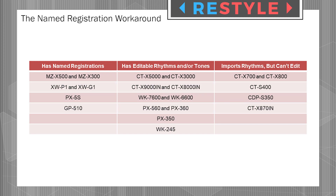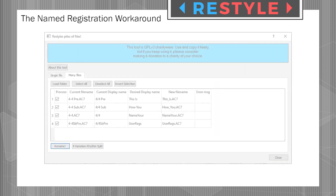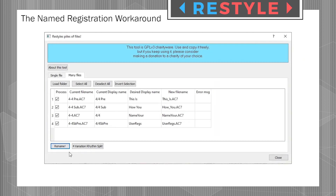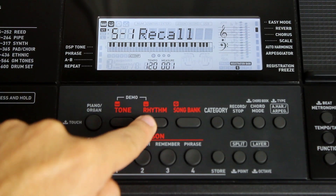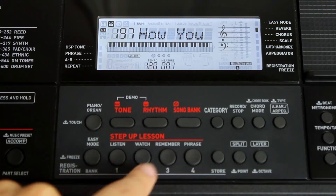Some recent Casio releases such as the CTX700, the CDPS350, and the CTS400 can technically work with custom data in the form of importing user rhythms, but they normally can't utilize this workaround because they have no way of editing these rhythms once they've been imported to the keyboard itself. Thanks to ReStyle's handy rhythm renaming feature, owners of these import-only instruments can now make full use of the workaround to apply helpful labels to their registrations.